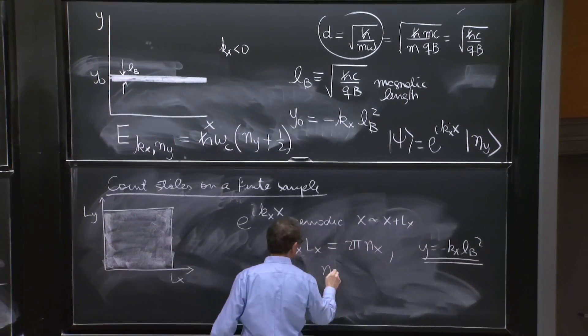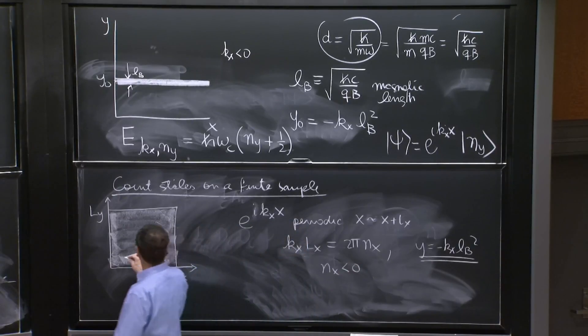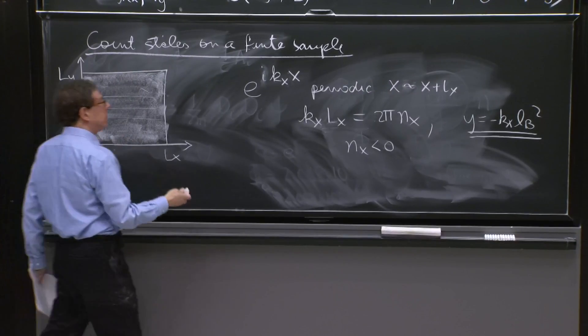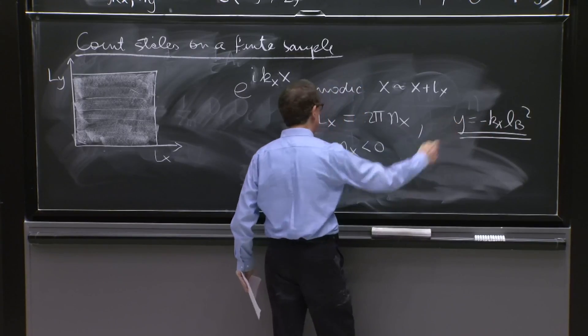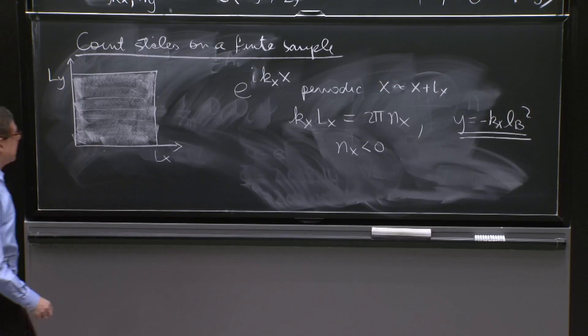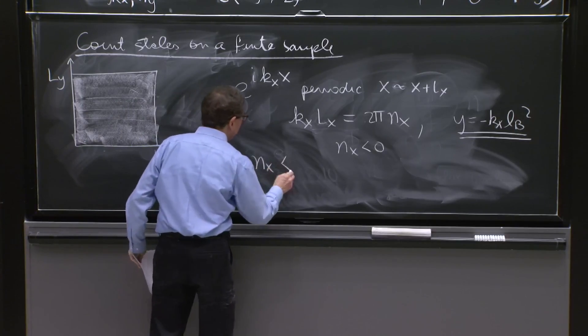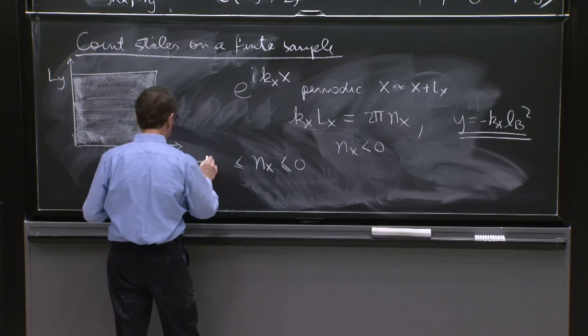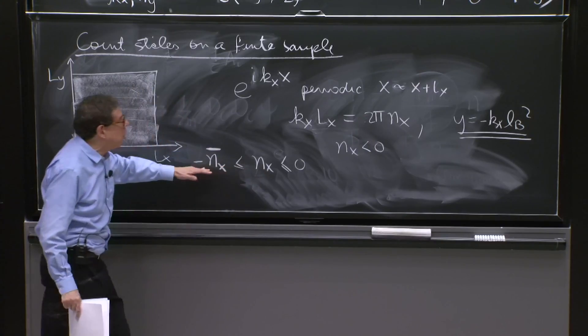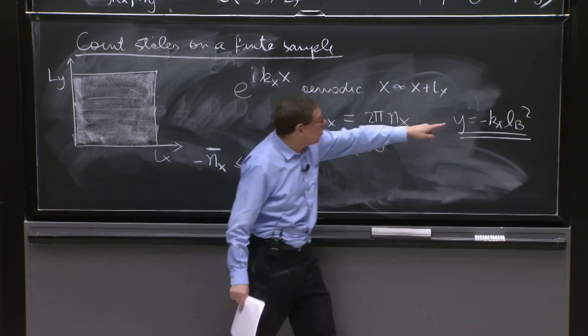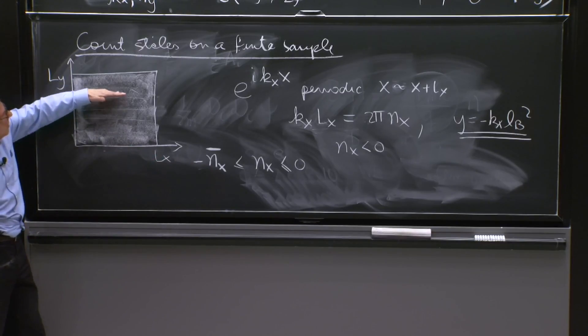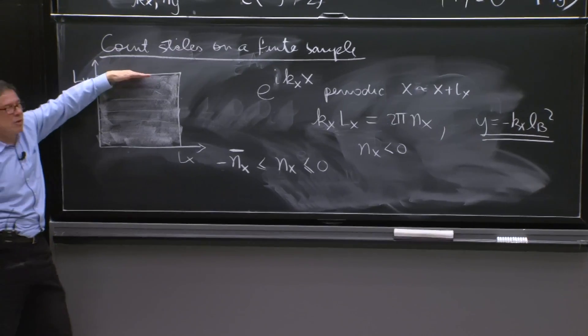Since we know that y_naught is equal to minus k_x*L_b^2, we should take n_x negative so that you're within the sample. You must be in y positive. And therefore, k_x should be negative. N_x should be negative. And now I have a way to count. Because I can take n_x negative up to some value minus n_x bar. And when n_x grows, k_x grows and y grows. So I can take the last n_x that I can use is the one in which the orbit is still in the sample up to the value y_naught.